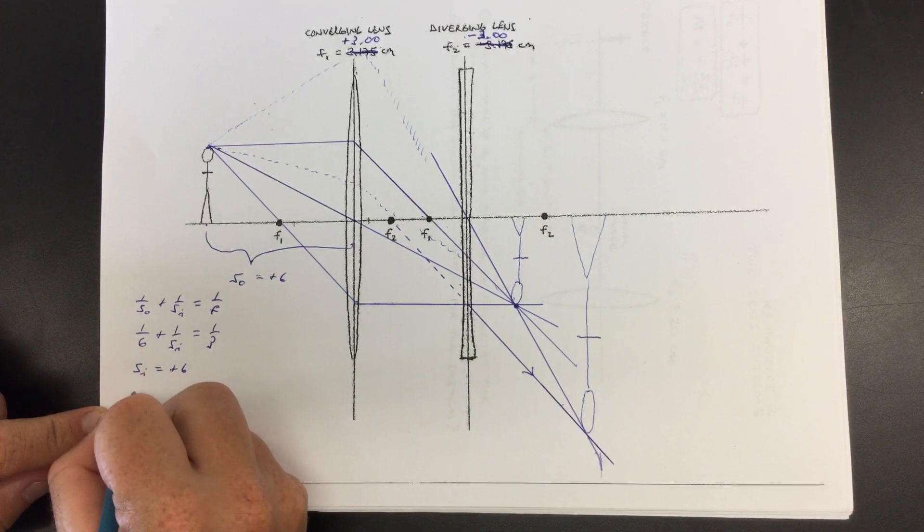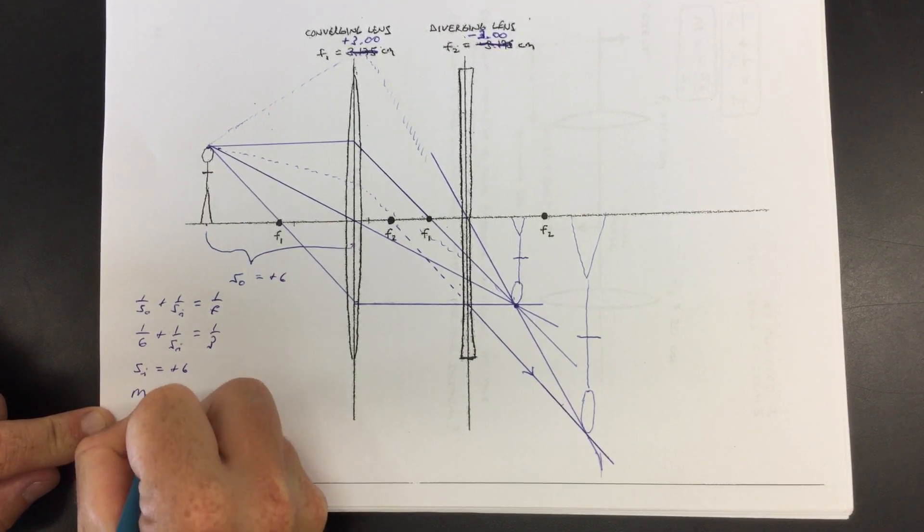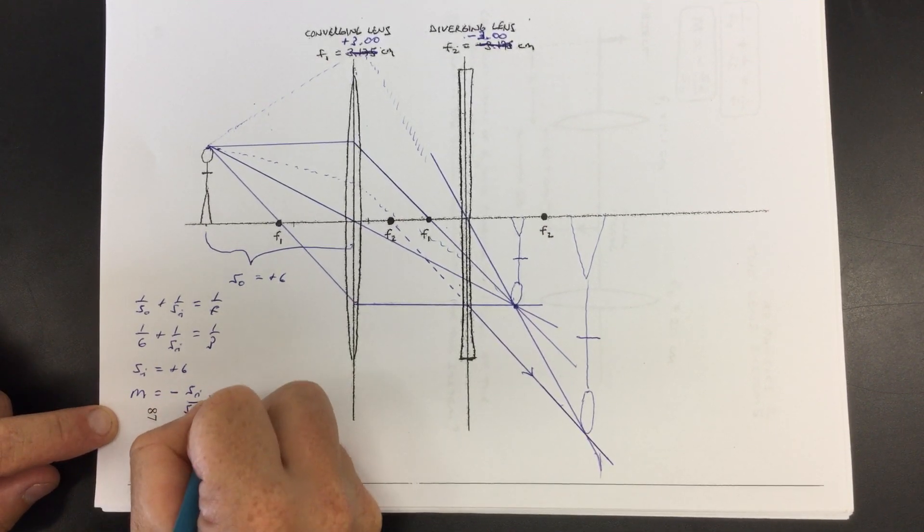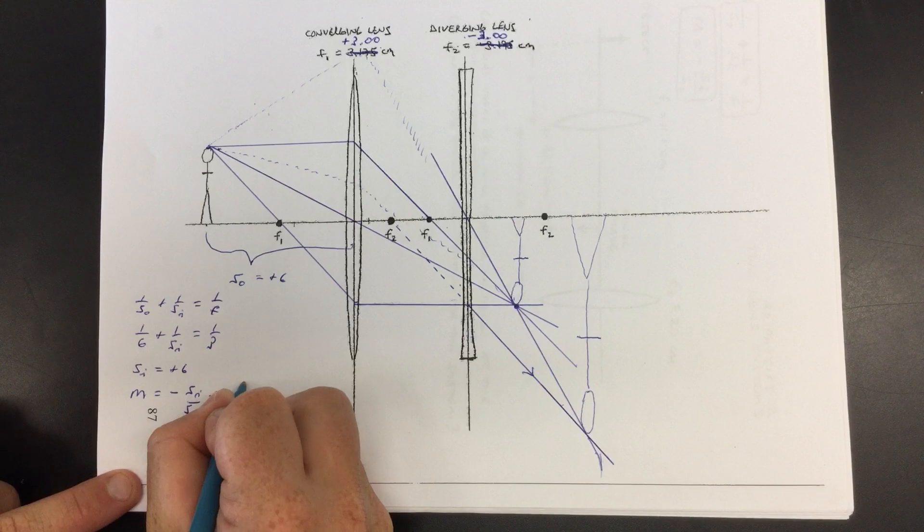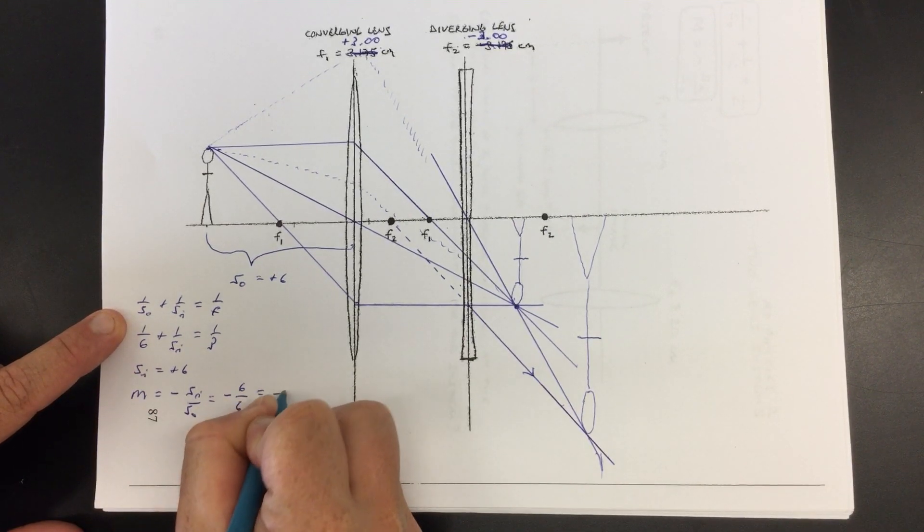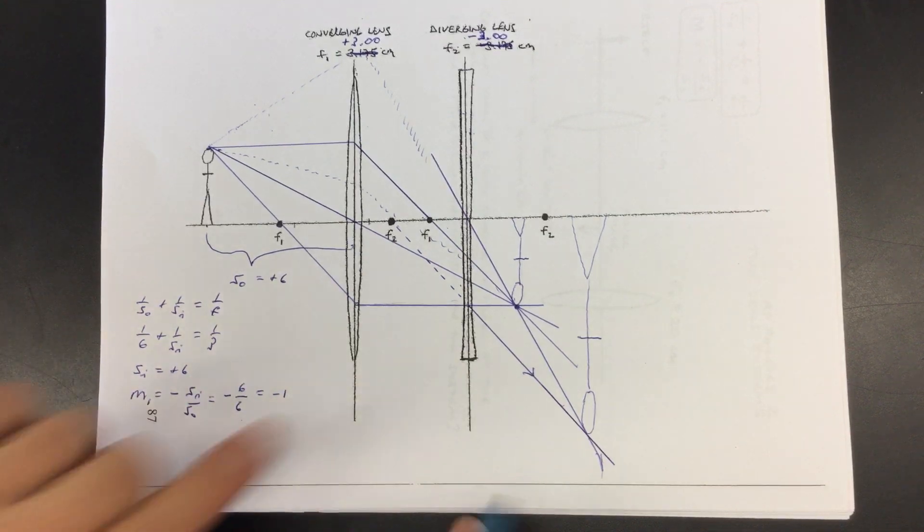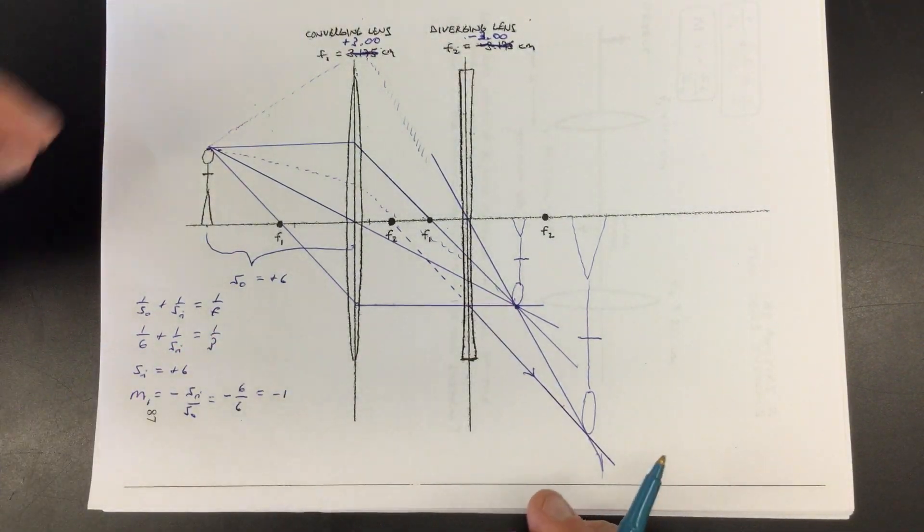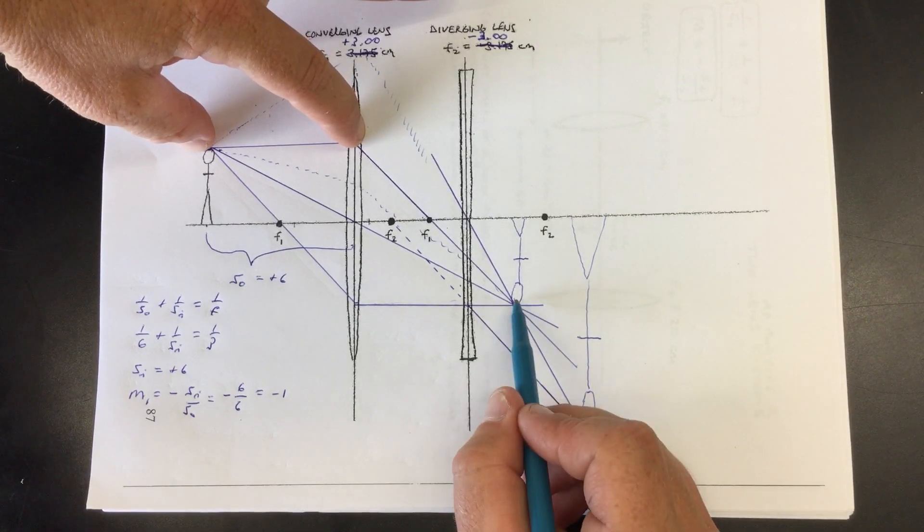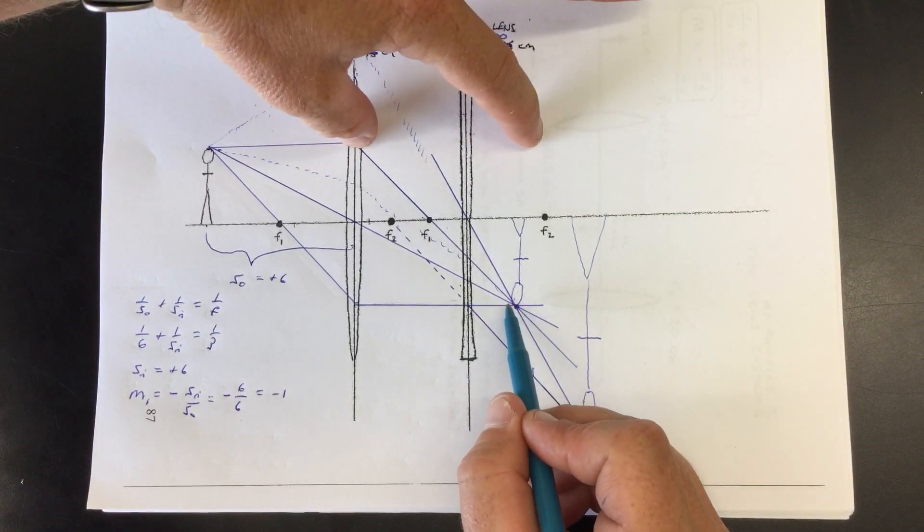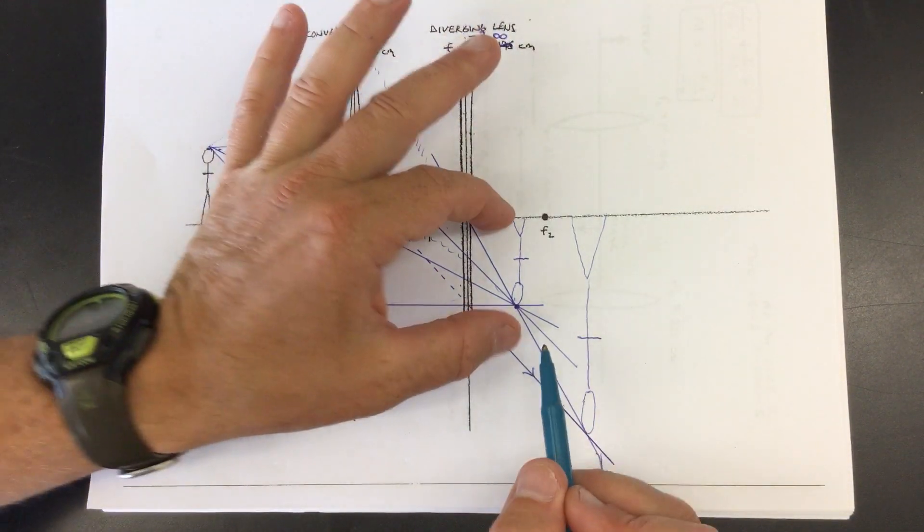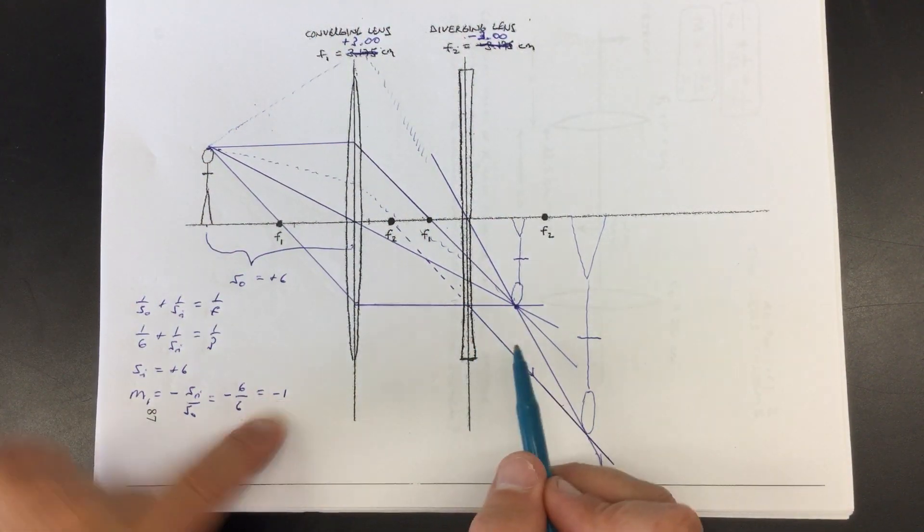And then you get the magnification, which is minus SI over SO or minus a positive six over the SO was also six. So you get negative one. So the magnification for lens one was negative one. So what's being predicted here is I put this object here six centimeters away. It says the image should have shown up six centimeters on the other side and upside down and be about the same size because the magnification was negative one.